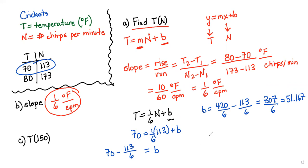And if we go ahead and divide by 6, we'll get a decimal, basically 51.167 if we round to three decimal places. Okay, so that's our B. So our part A, then, our T is equal to 1/6 of N, and I'll go ahead and leave it in exact form, plus 307 over 6. So that is our temperature as a function of chirps per minute. All right, so A we have done.